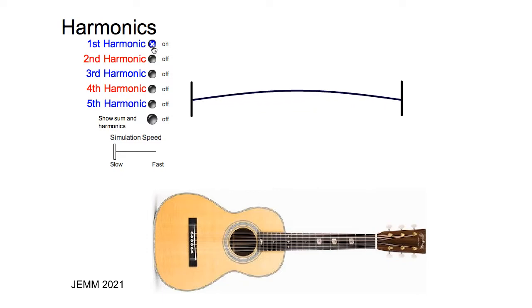This is called the first harmonic frequency. In addition, the string also vibrates in this manner at the exact same time. This is called the second harmonic frequency. This would be called the third harmonic frequency, and this is called the fourth harmonic frequency.